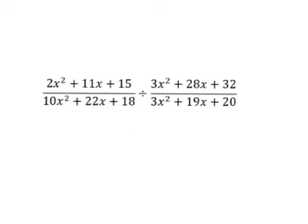The problem is (2x² + 11x + 15) over (10x² + 22x + 18), divided by (3x² + 28x + 32) over (3x² + 19x + 20).